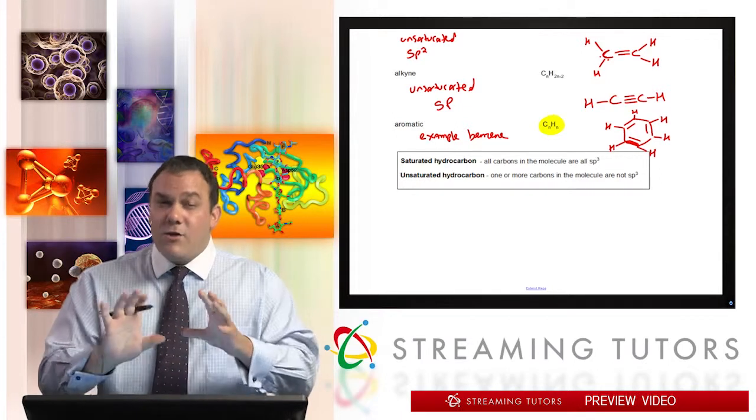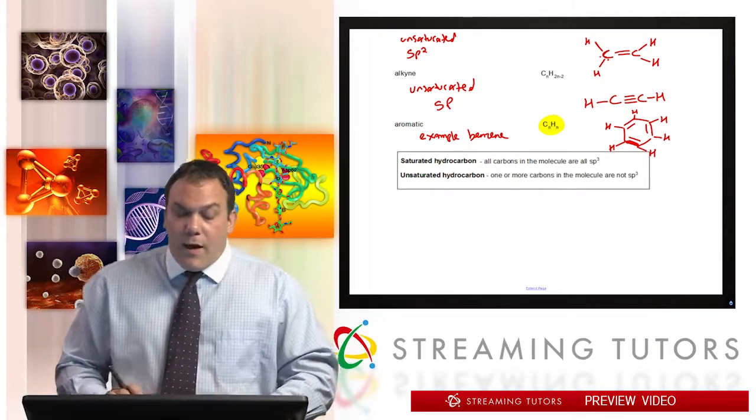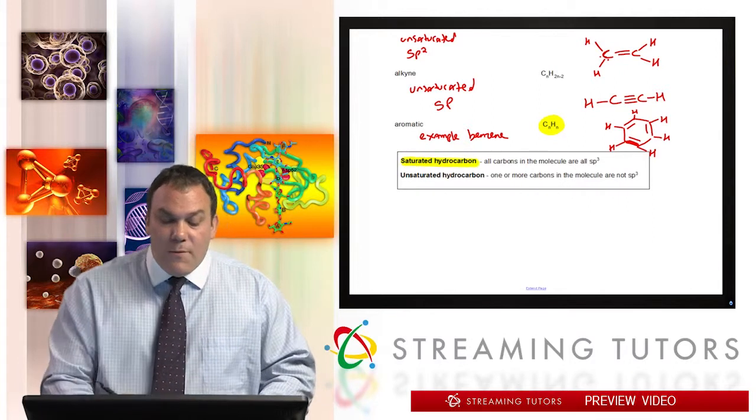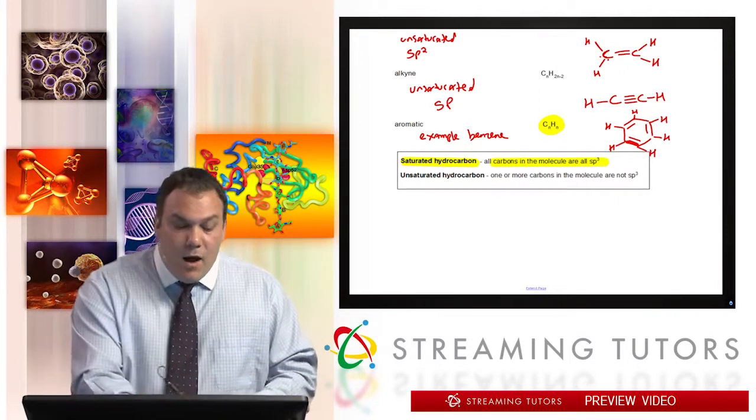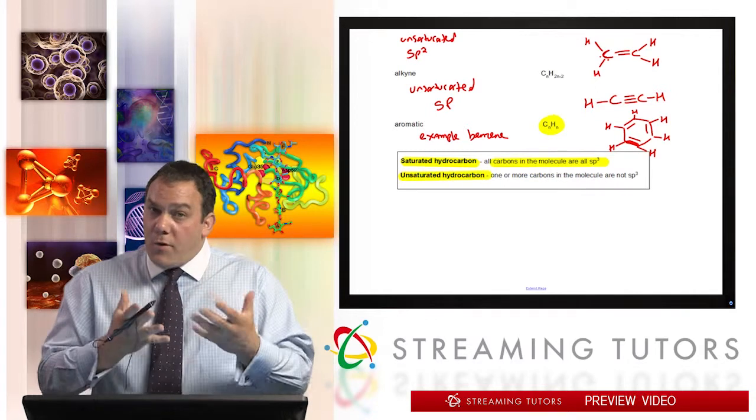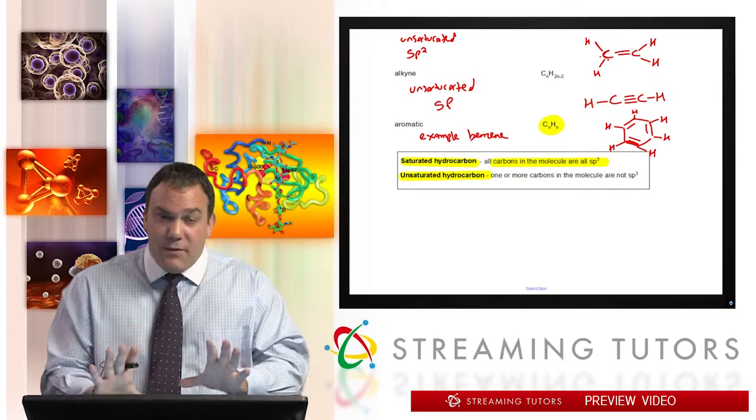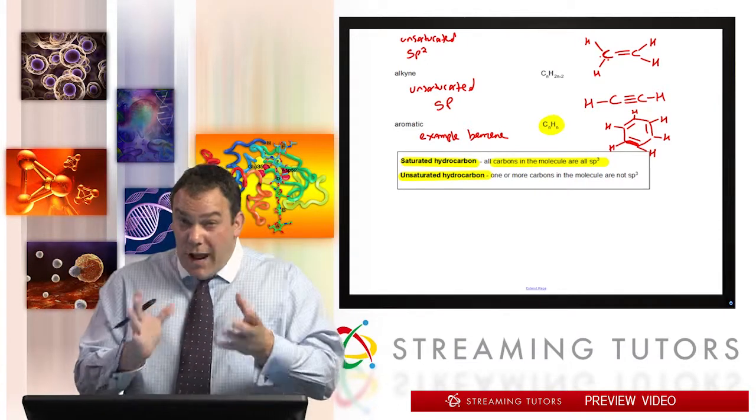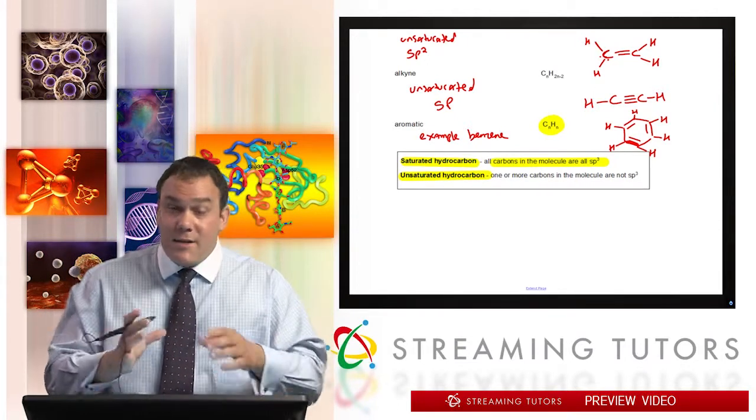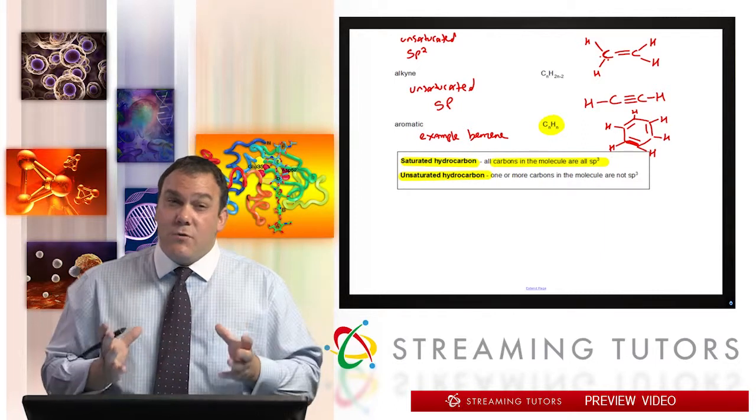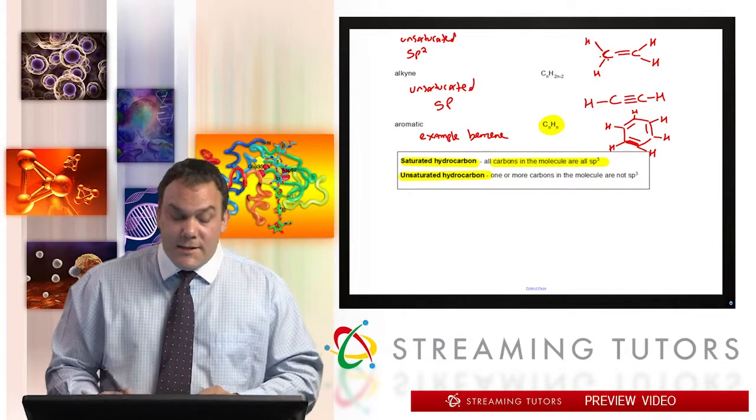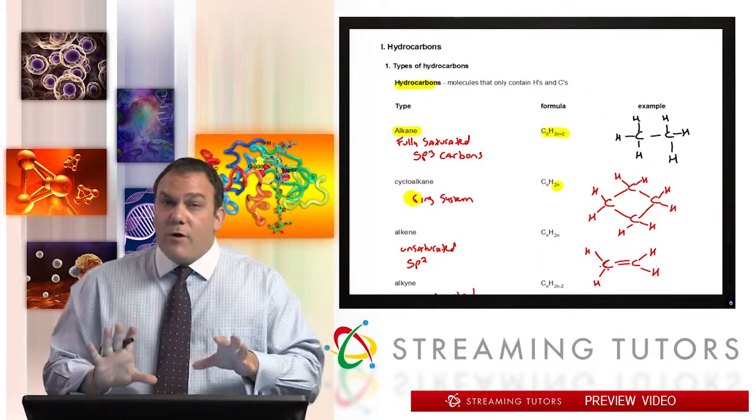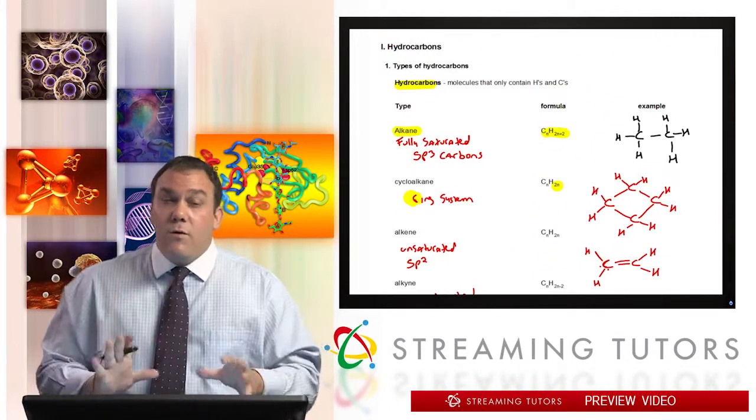So as I mentioned before, saturated hydrocarbons: all carbons must be sp3. Unsaturated: either one or more carbons are not sp3, they're sp2, they're sp, and that's how you know it's unsaturated. So aromatic systems are unsaturated because every carbon is sp2, and so it's an unsaturated system.